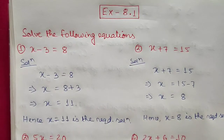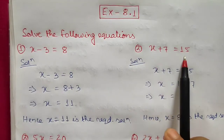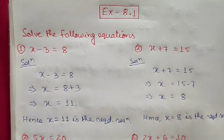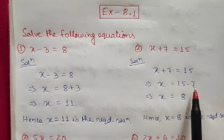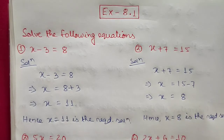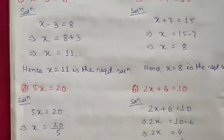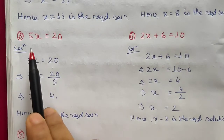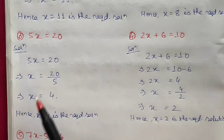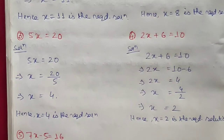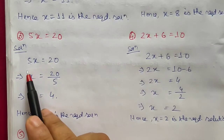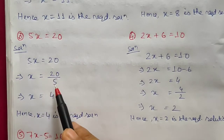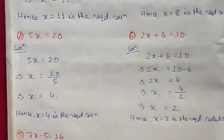Question 2: x plus 7 equals 15. Transposing plus 7 to the right side gives minus 7, so x equals 15 minus 7, which is 8. Hence x equals 8 is the required solution. Question 3: 5x equals 20. Since 5 is multiplied, transposing it to the other side means dividing, so x equals 20 divided by 5, which gives x equals 4.